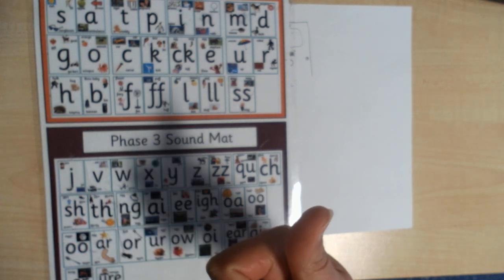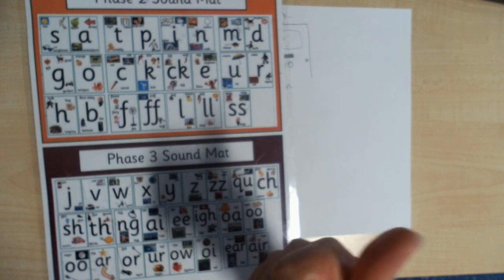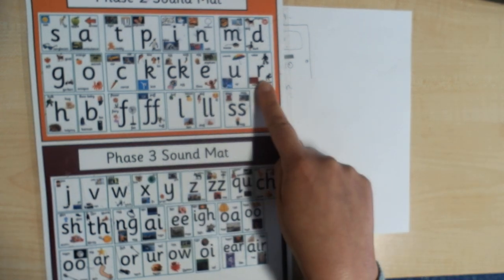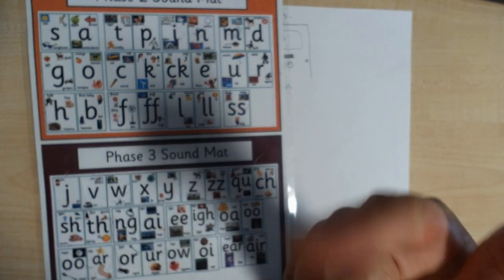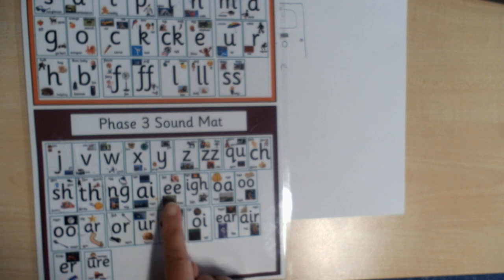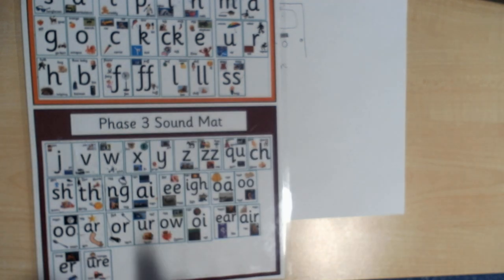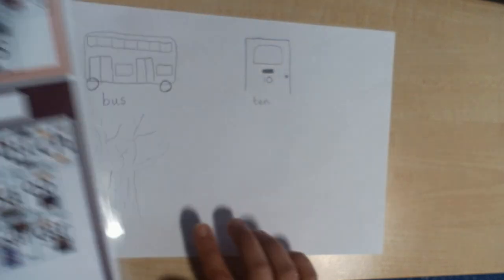So tree, I can hear t-t. Oh I know that one. T-r-ee. Oh that's a sound we haven't learnt yet. That's a phase three sound. It's another digraph. It's the ee sound here. So I'm going to use this to help me to write my word tree.